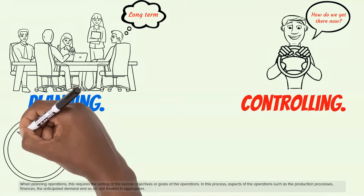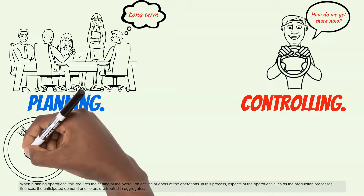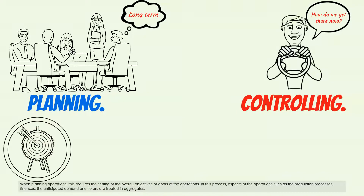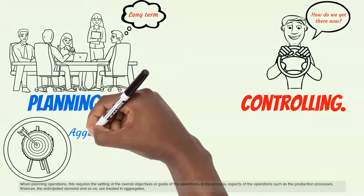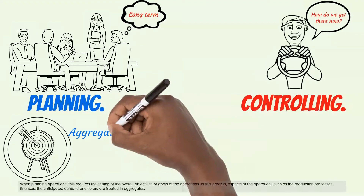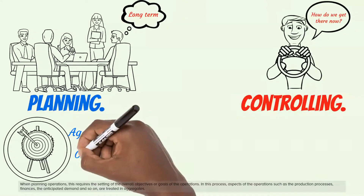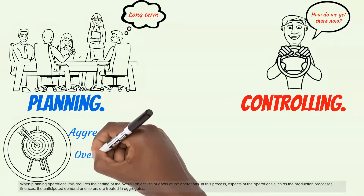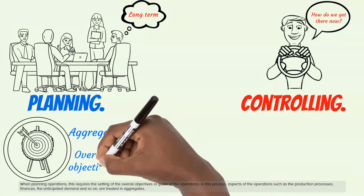When planning operations, this requires the setting of the overall objectives or goals of the operations. In this process, aspects of the operations such as the production processes, finances, the anticipated demand, and so on, are treated in aggregates.